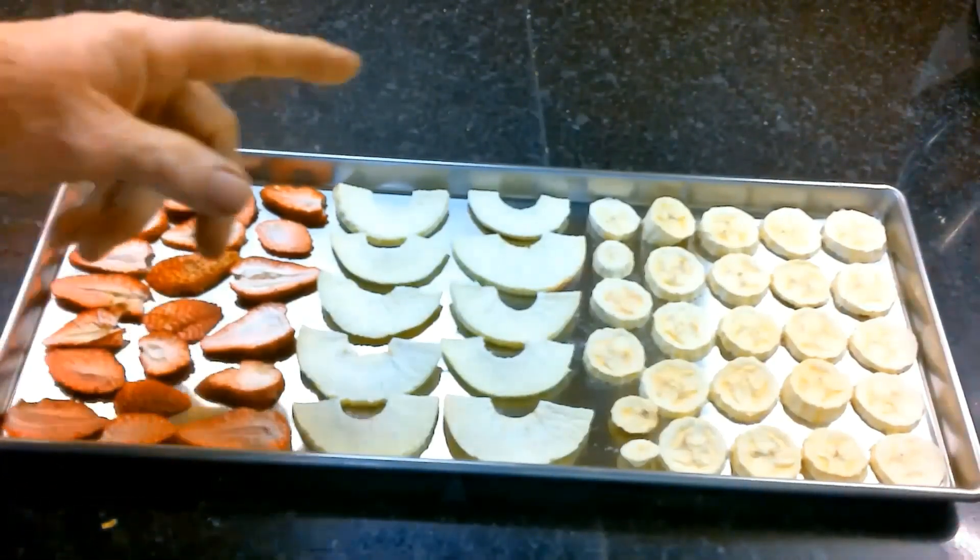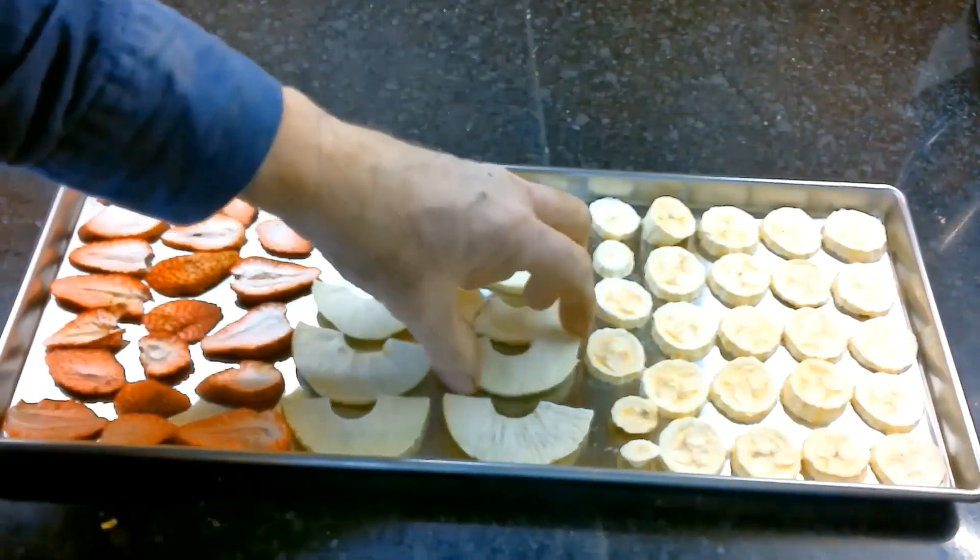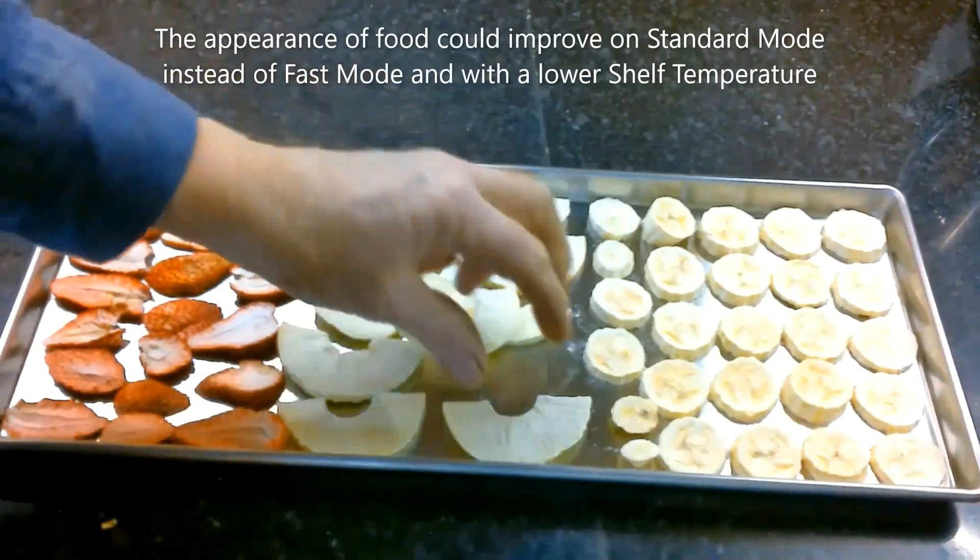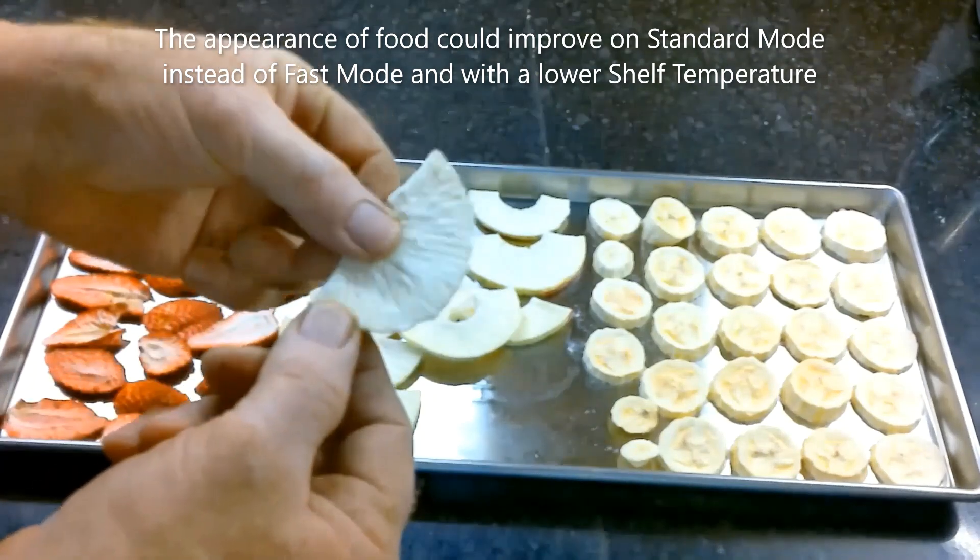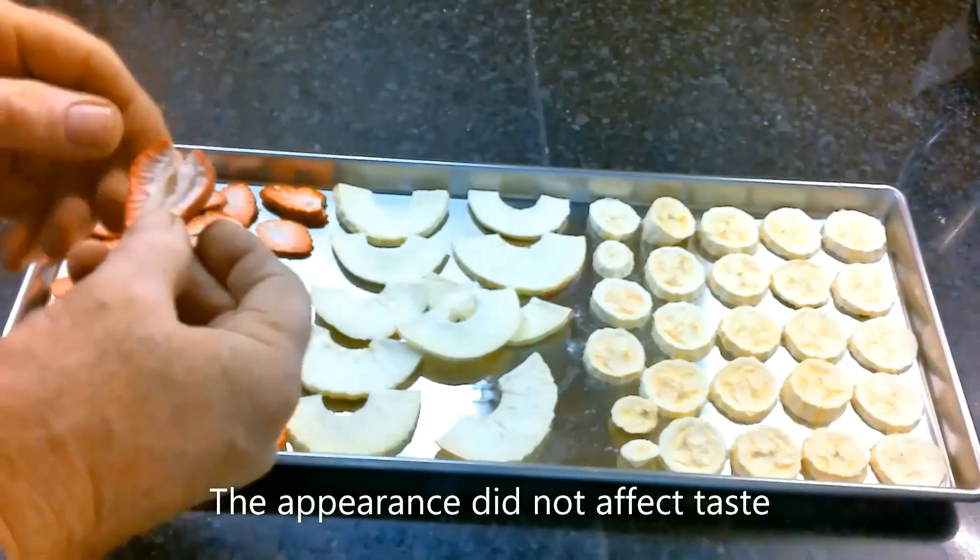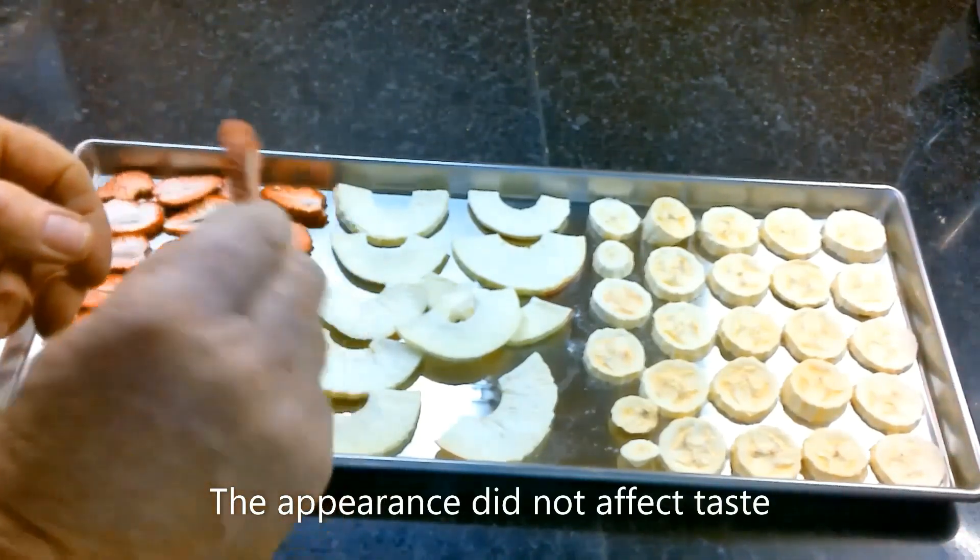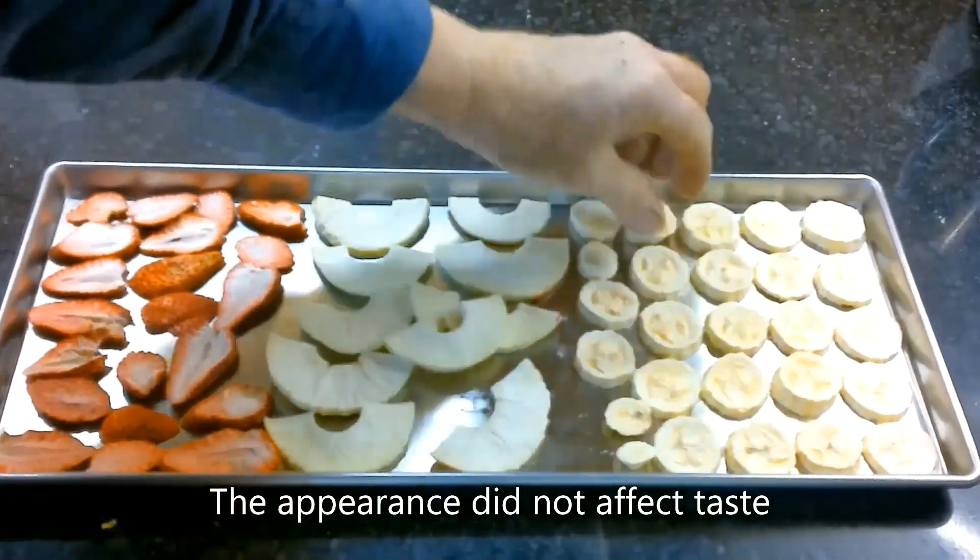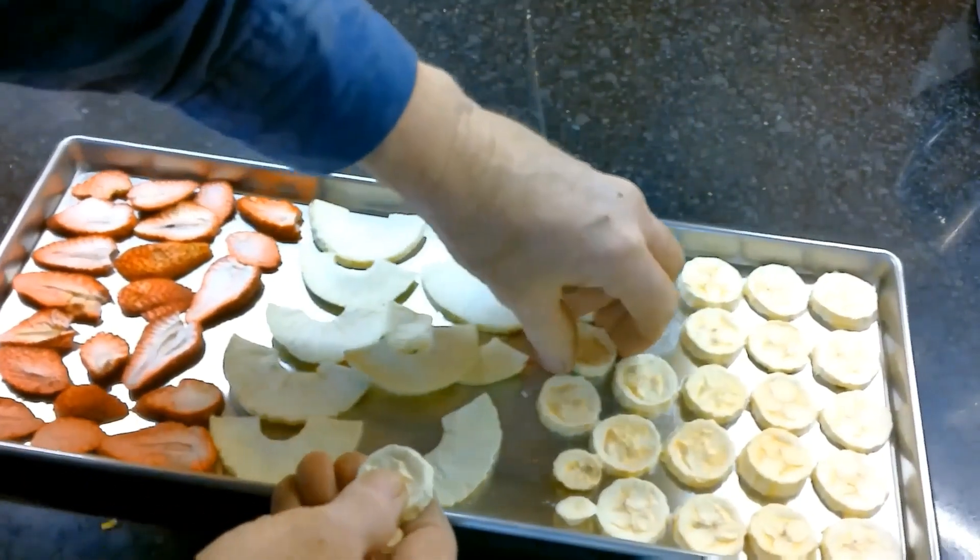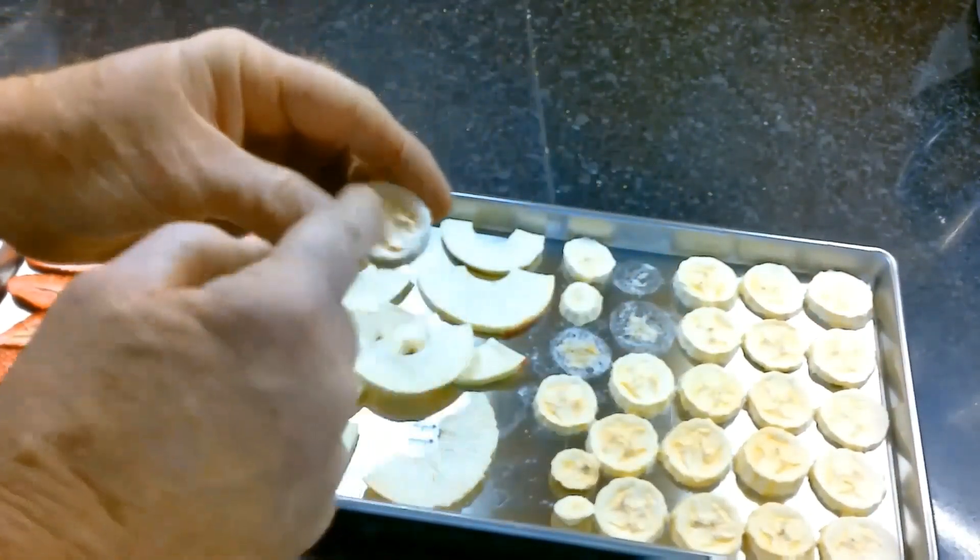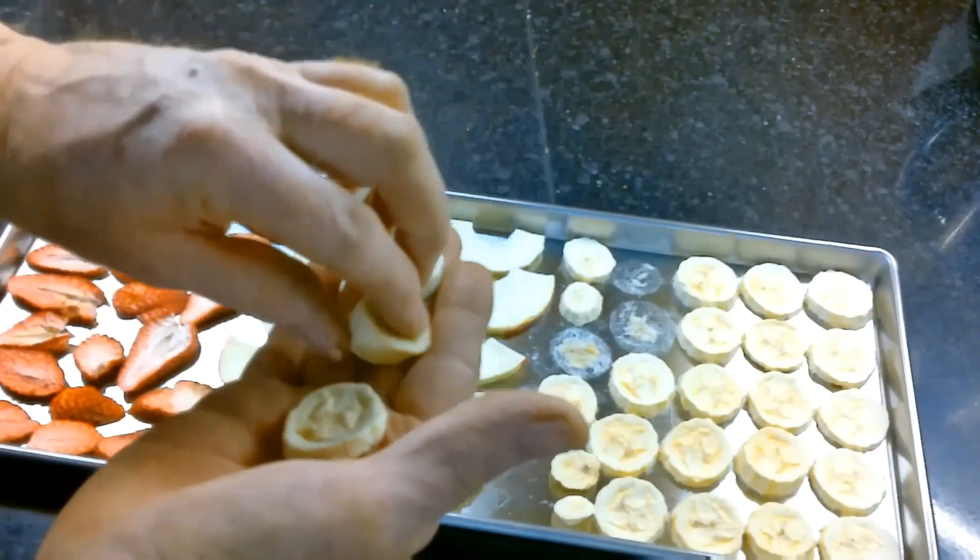Next tray: strawberries, apples, and bananas. These apples also soaked in fruit fresh came out to be pretty good, but once again there's this intense wrinkling effect going across the apples. The strawberries also have the sunken-in appearance that my normal strawberries do not have. The bananas have an interesting color to them. They have almost a pinkish tint in the center of my bananas, and they also appear to be sunken in.